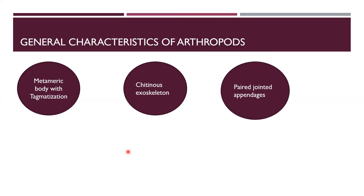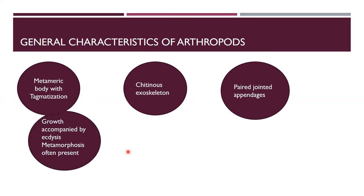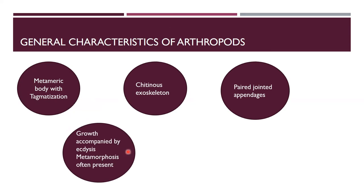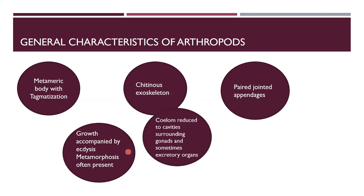They have paired jointed appendages. Because their body has segments, there are pairs of appendages for locomotion. Growth is accompanied by the exoskeleton — the exoskeleton limits growth, so they need to shed and replace their exoskeleton with new ones. This process is called ecdysis. Then metamorphosis is the change in shape of the larva to the adult, and this condition exists in arthropods.